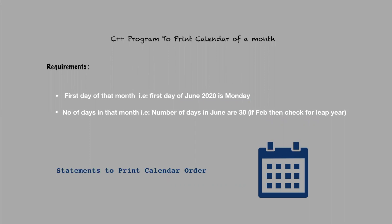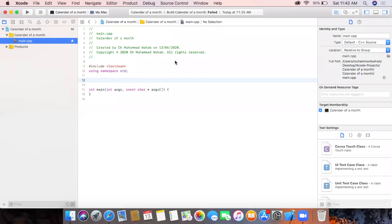We will also write a function to get the number of days in the month. For example, if the month is June, the number of days is 30. We will also check if the year is a leap year and if the month is February — if it is a leap year it returns 29, otherwise 28.